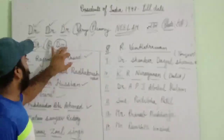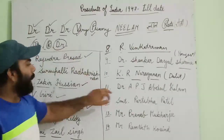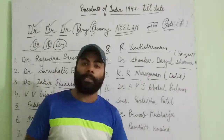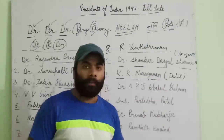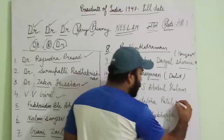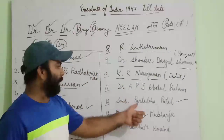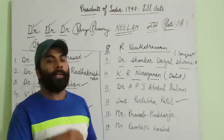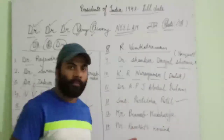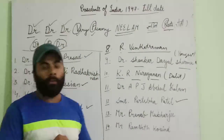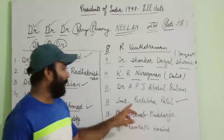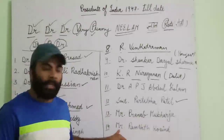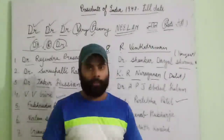So far we have covered 11 presidents. There are 14 presidents in total up to today. The remaining three are: Shrimati Pratibha Devi Singh Patil — the first lady president of India (12th); Mr. Pranab Mukherjee (13th); and the current president Mr. Ram Nath Kovind (14th).